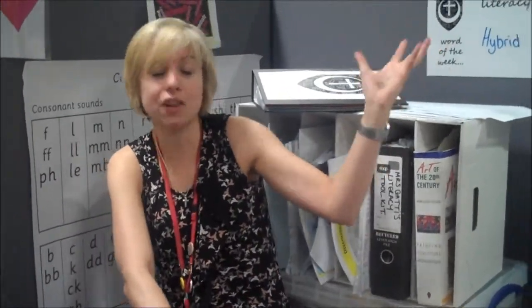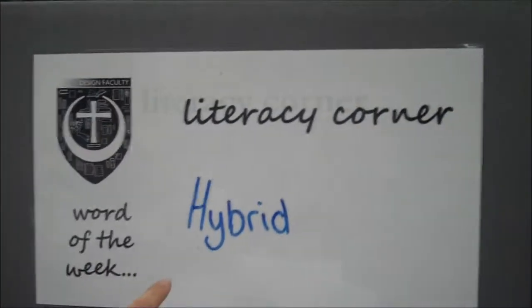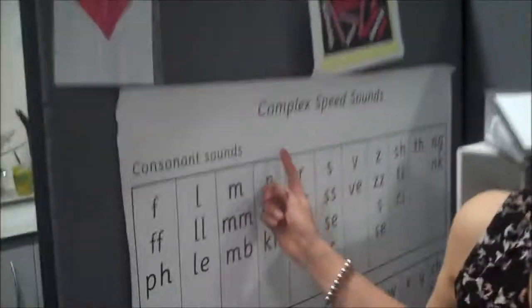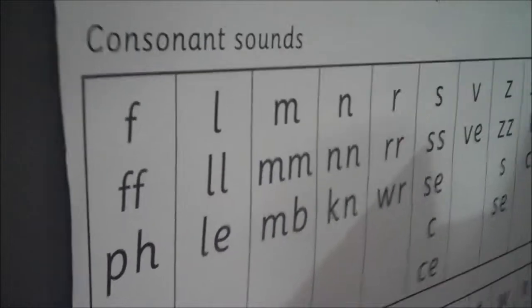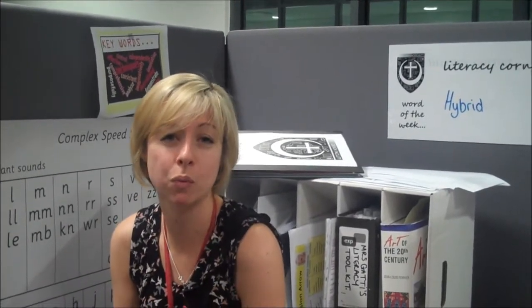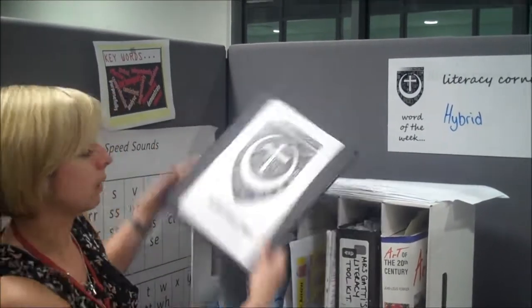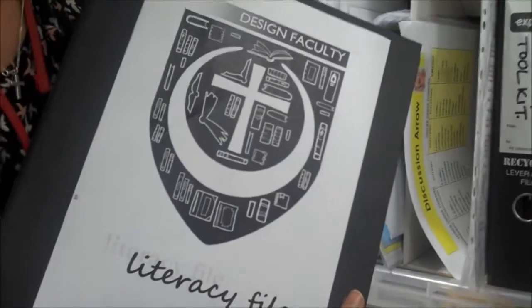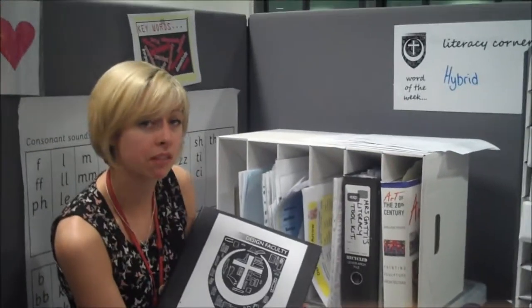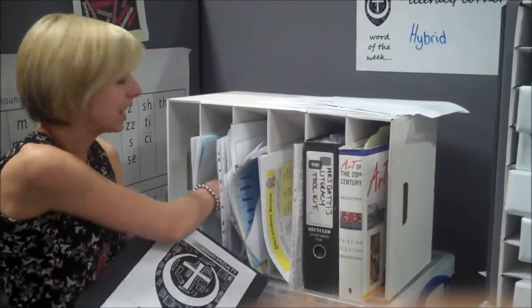Our literacy corner is in every classroom in the art department with our word of the week. If learners use that word in the lesson, they get five reward points. Also, phonics — this is something we're trying here at the academy. What we've seen in Ofsted inspections is that we have to use phonics to help spell out the word rather than just spelling it for the learner. So what we have here is our literacy file, where learners can access Bloom's arrows, sentence starters, works by artists, and even a dictionary.